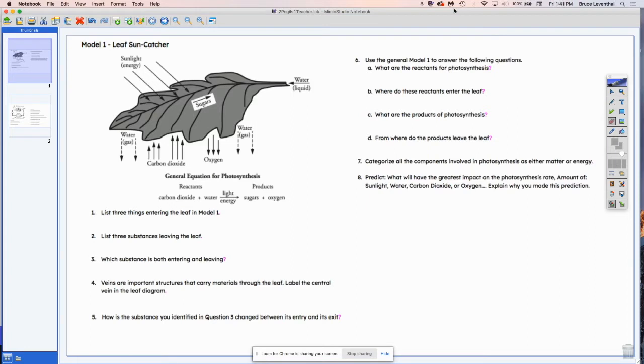So the first thing that we are looking at right now is the Pogol that was assigned earlier in the week in which you were looking at the anatomy of a leaf. And I would like to go over the solutions with you. In the first question, it says, list three things entering the leaf in model one.